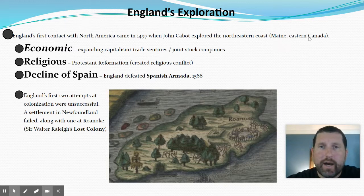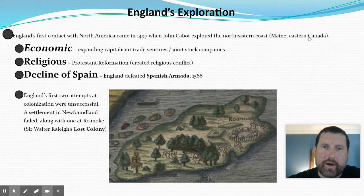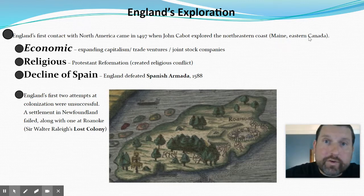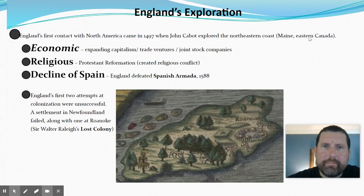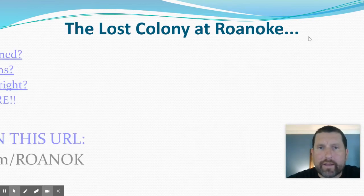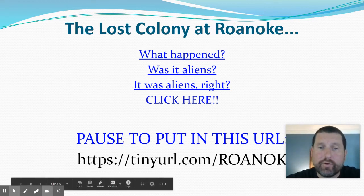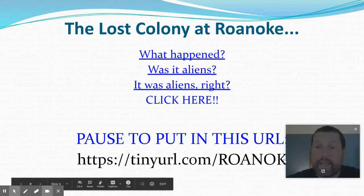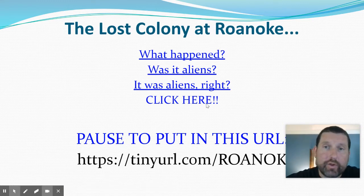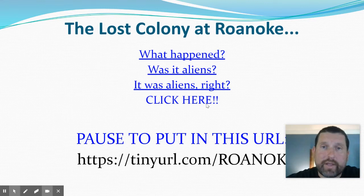It was tough sledding early on. It took some time for the English to actually get a foothold in the New World. The most famous story from this time is right here in North Carolina — the lost colony of Roanoke, Sir Walter Raleigh. It's a fascinating story. It's probably all aliens, and that's what happened to them. I'd like you to take a moment to type in this URL — there is no E on the end of Roanoke, exactly as you see it — and it will bring you to a quick video about the lost colony at Roanoke.